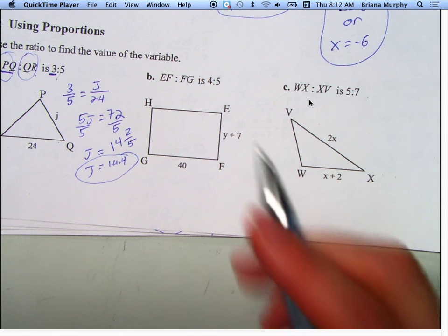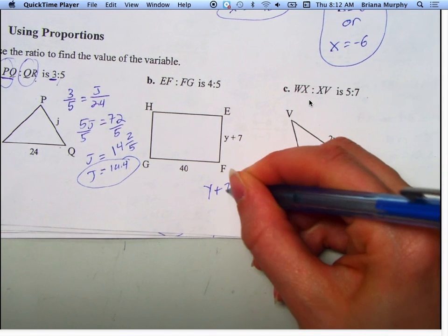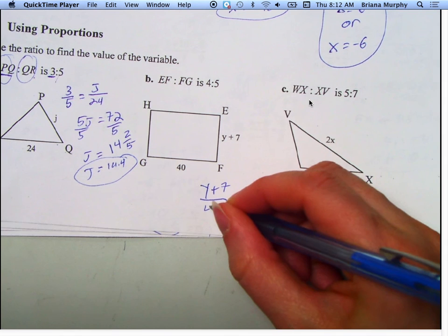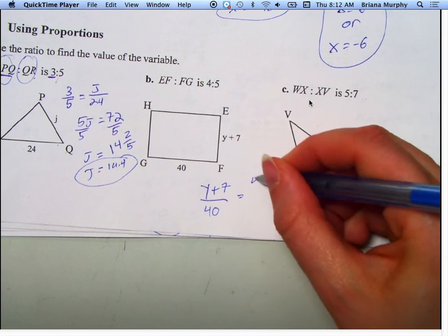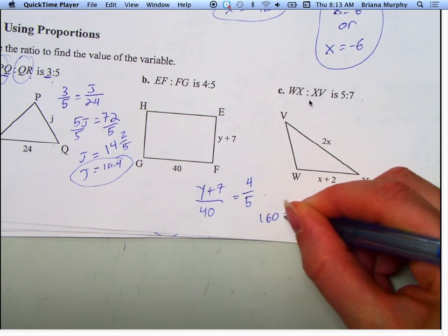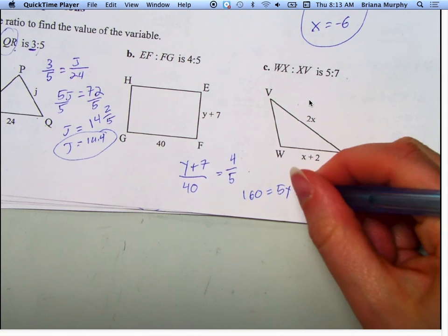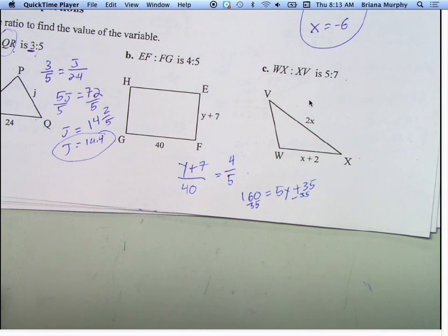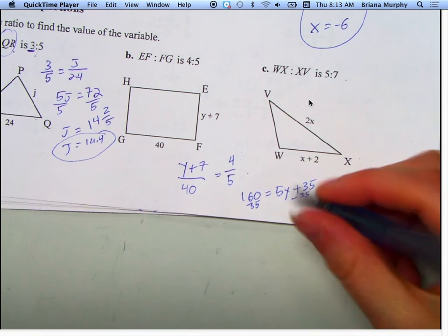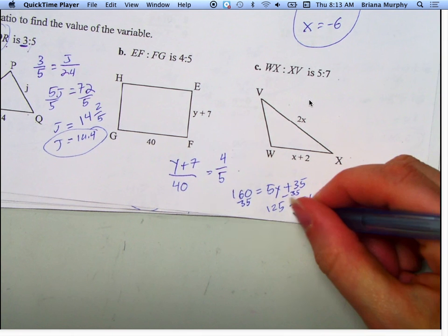Now, B. We've got EF over FG equals 4 fifths. So EF is Y plus 7. I'm putting that over FG, which is 40. Then we've got 4 on top and 5 on the bottom. Are we okay with setting that up? So we go 4 times 40 is 160. 5 times Y is 5Y. 5 times 7 is 35. Now I subtract 35 from both sides. And I get 125 equals 5Y. I divide that by 5 and I get Y equals 25.